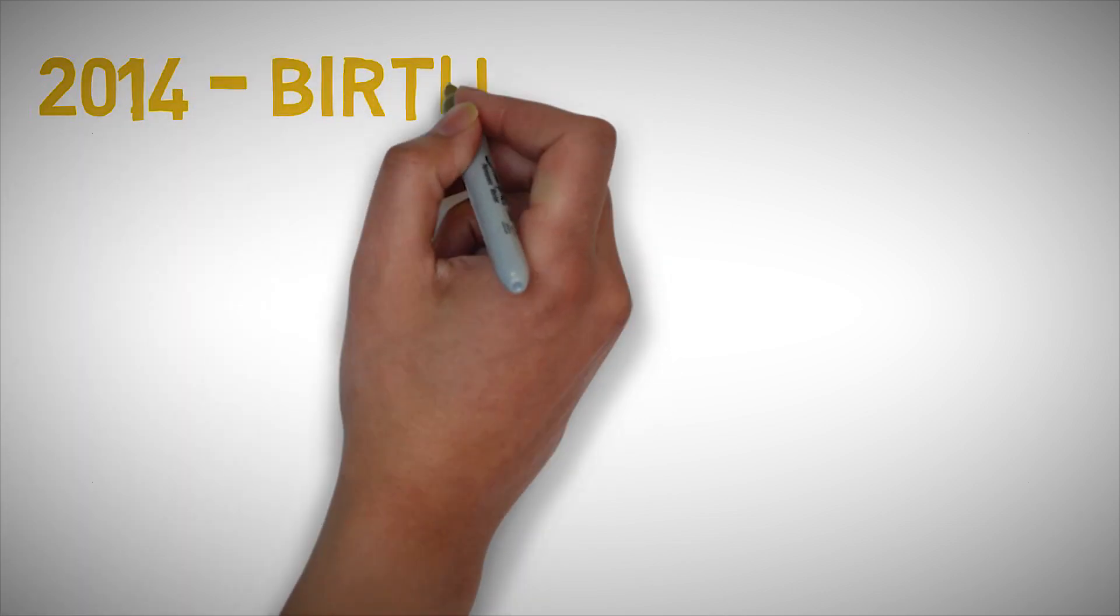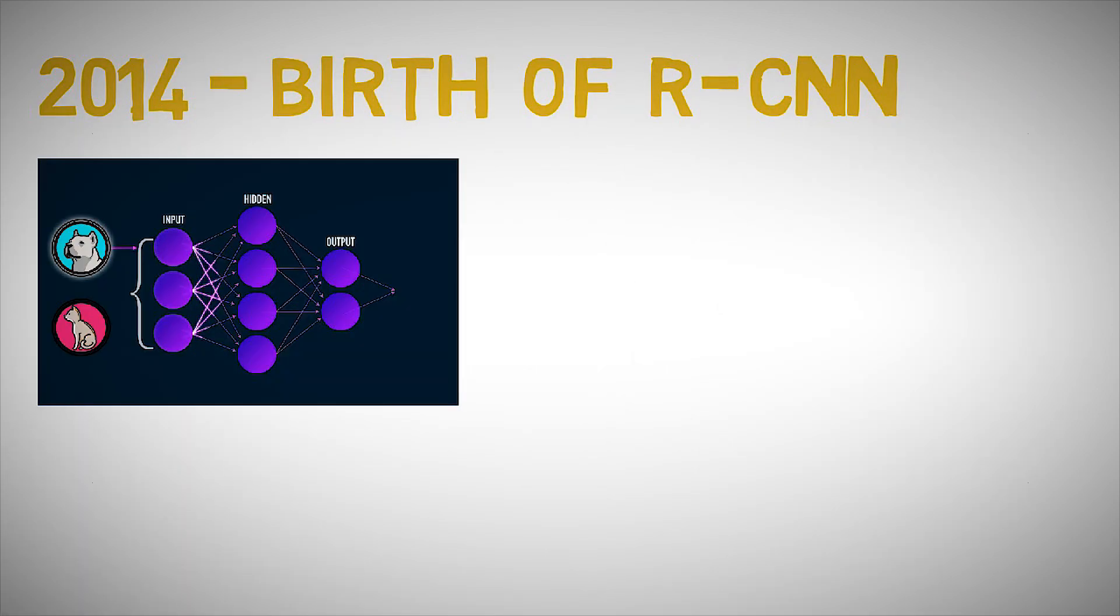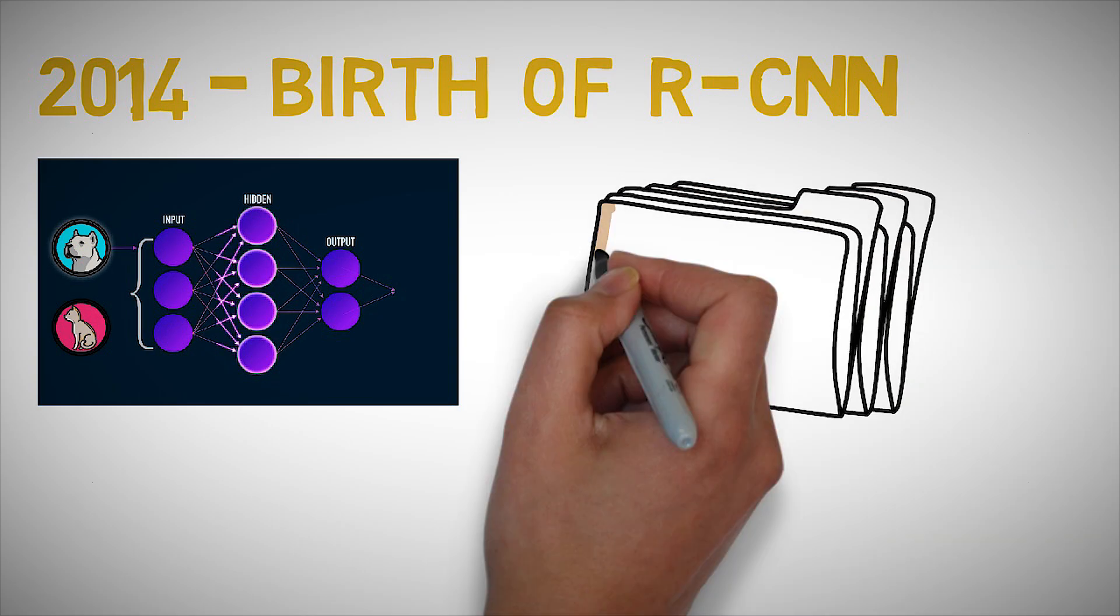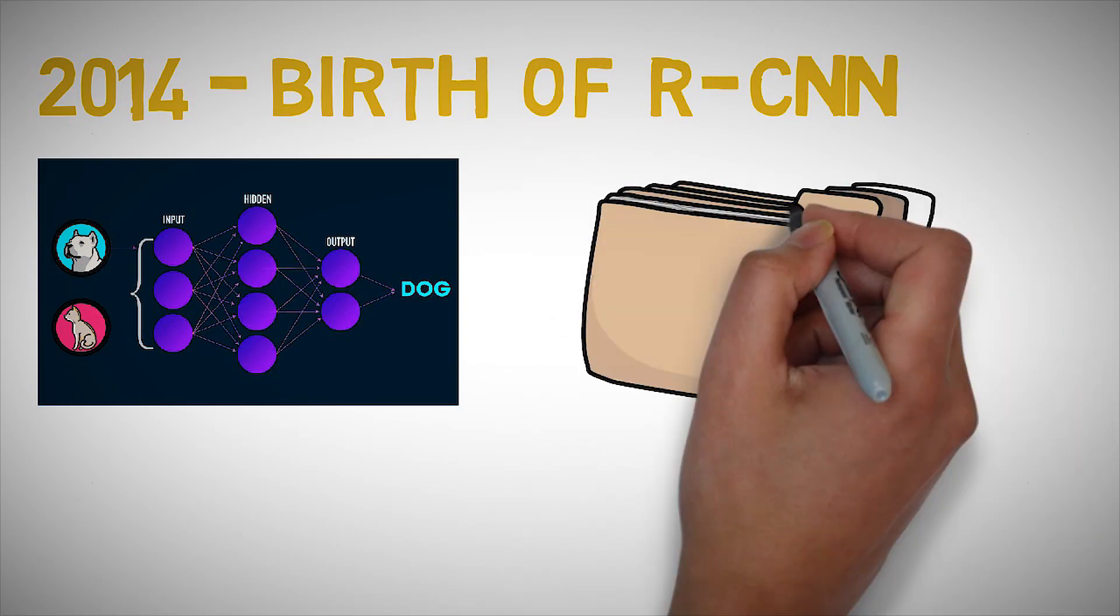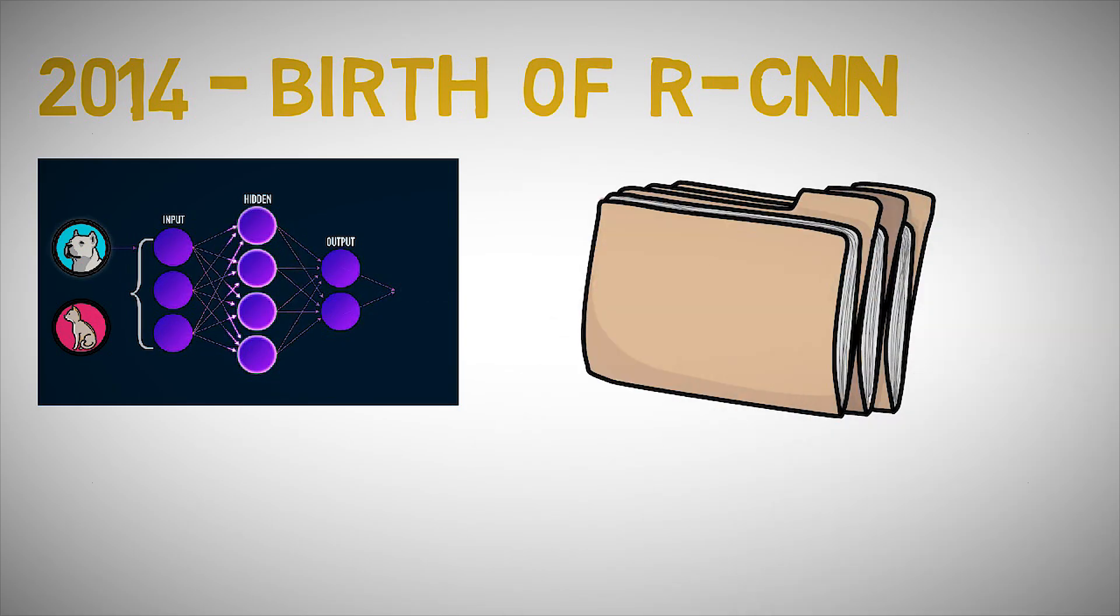2014, R-CNN, an early application of CNNs to object detection. Before we get into the history, let's quickly define object detection, which is the task of finding the different objects in an image and classifying them. Ross Girshick et al. found that a CNN can lead to dramatically higher object detection performance on the Pascal VOC dataset as compared to systems based on simpler HOG-like features.